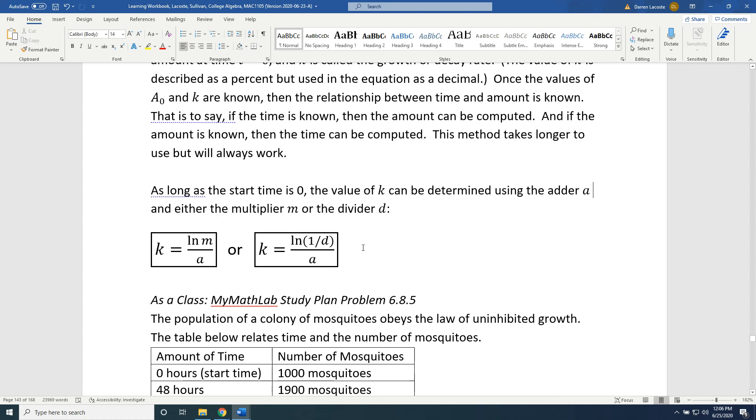But if that method fails, because the value you're looking for doesn't appear in your table, then adjust to using the exponential law equation and know that you'll get the k value in your exponential law equation from your previous attempt at using patterns. The patterns are going to give you the adder a and either the multiplier m or the divider d, depending on whether you have growth or decay. Growth if you have a multiplier, decay if you have a divider.